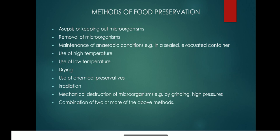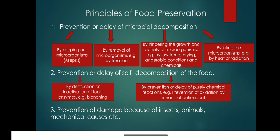Each of these methods are involved within the principles of food preservation. There are three different principles of food preservation. The first is prevention or delay of microbial decomposition, which involves four methods: keeping out microorganisms, removal of microorganisms, hindering the growth and activity of microorganisms, and killing the microorganisms.